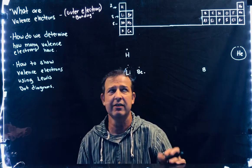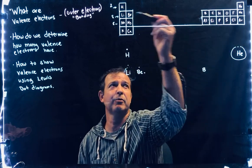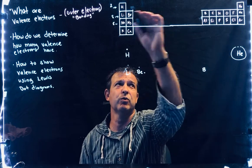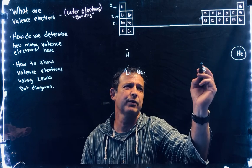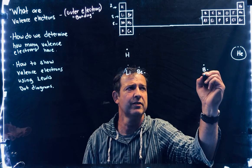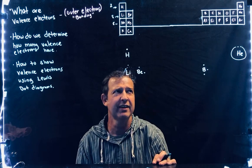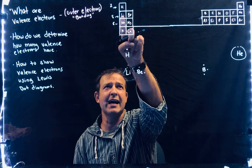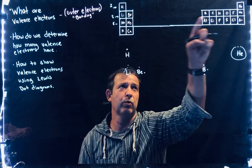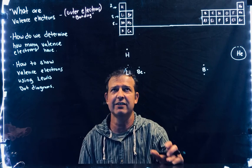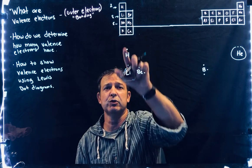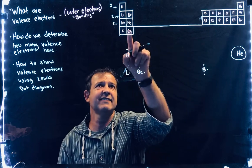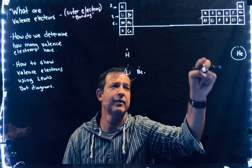Boron has five electrons total — the fifth element. Two go in the first shell, leaving three valence electrons. There's actually a quick way of doing this: if you count what position an element is in within its row, that tells you the number of valence electrons. Lithium is first in its row — one valence electron. Beryllium is second — two valence electrons. Boron is third — three valence electrons.